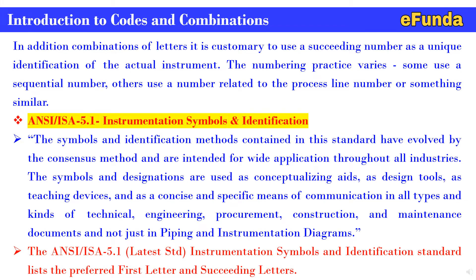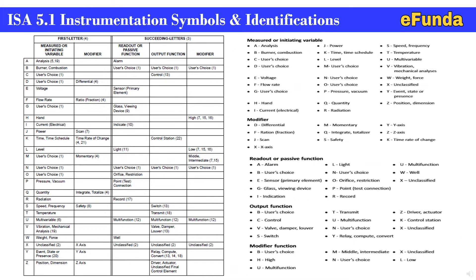ANSI ISA 5.1 latest standard instrumentation symbols and identification standard lists the preferred first letter and succeeding letters. For that, refer to the latest available standard. ISA 5.1 Instrumentation Symbols and Identification - today we will refer to an extract from ISA standard where tabulated information containing the first letter, succeeding letter, and a table of A to Z order where measured or initiating variable, modifier, readout or passive function, output function, and modifiers are covered under succeeding letters.